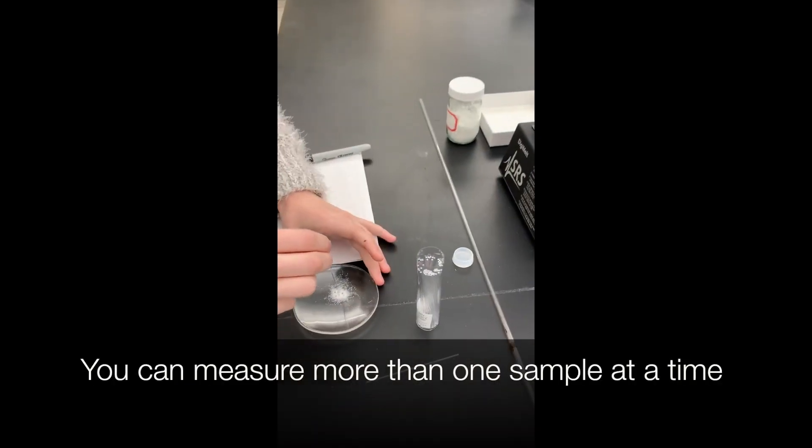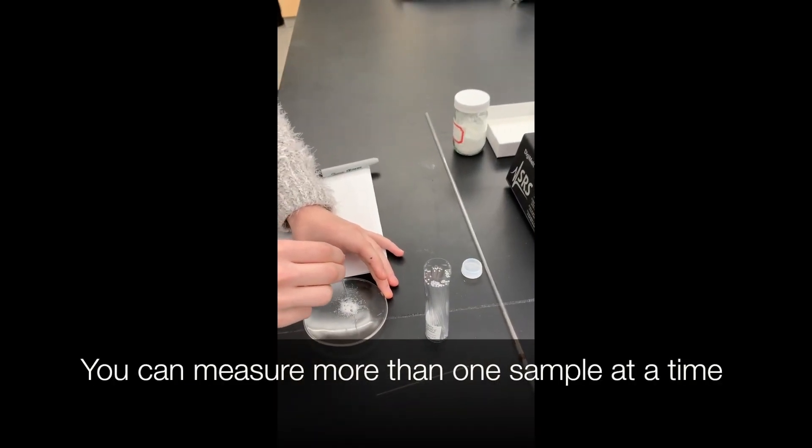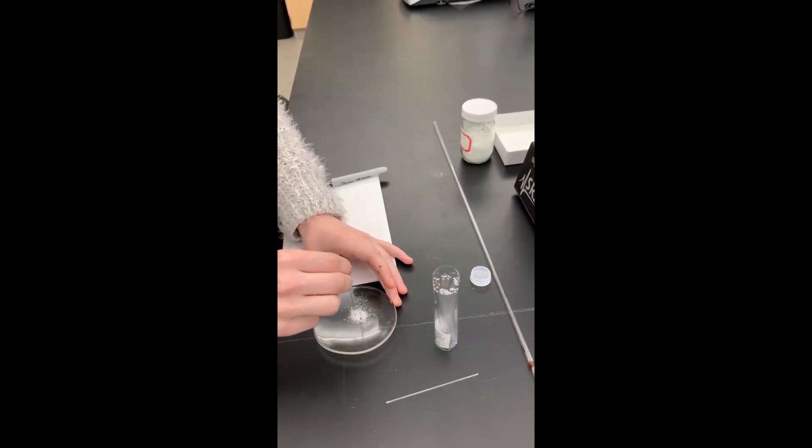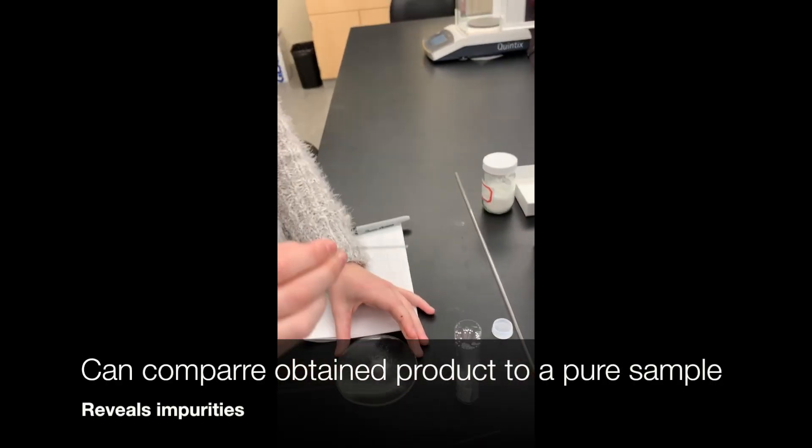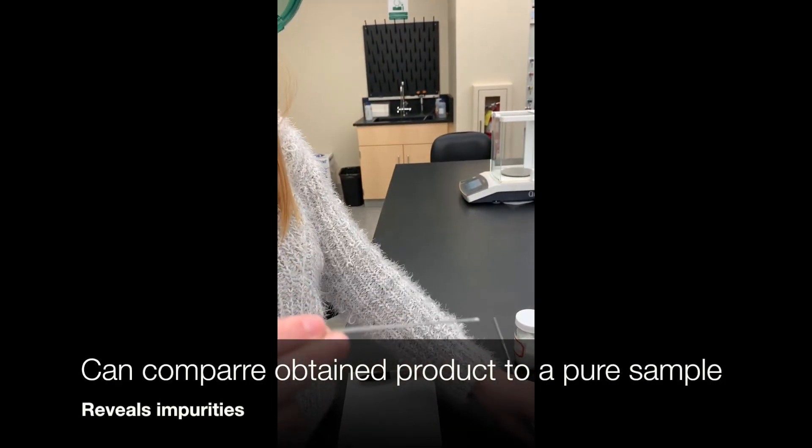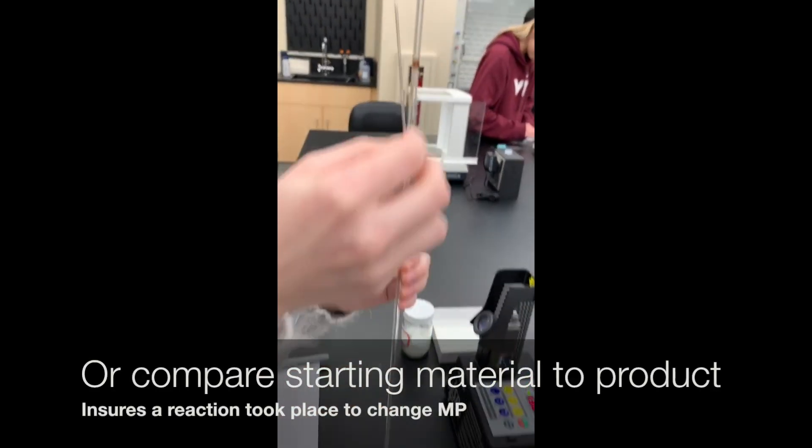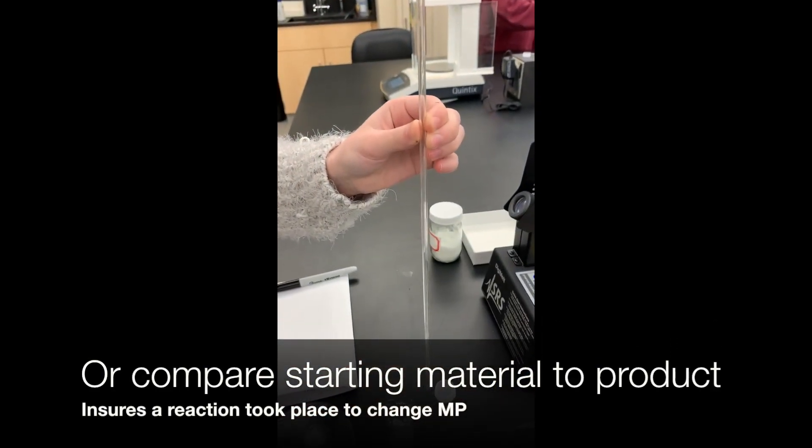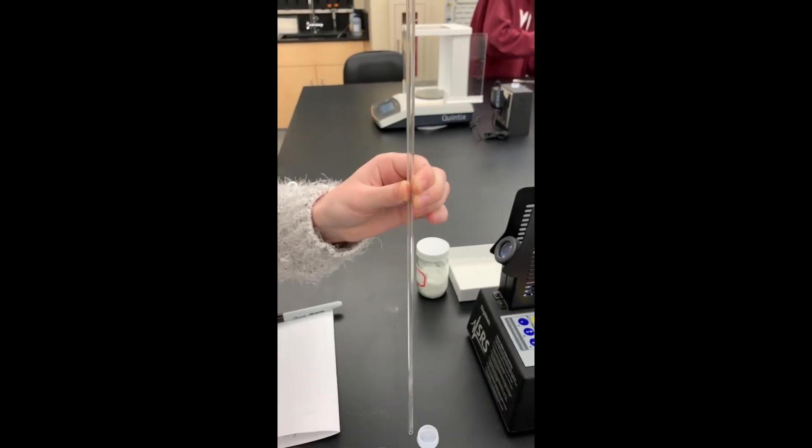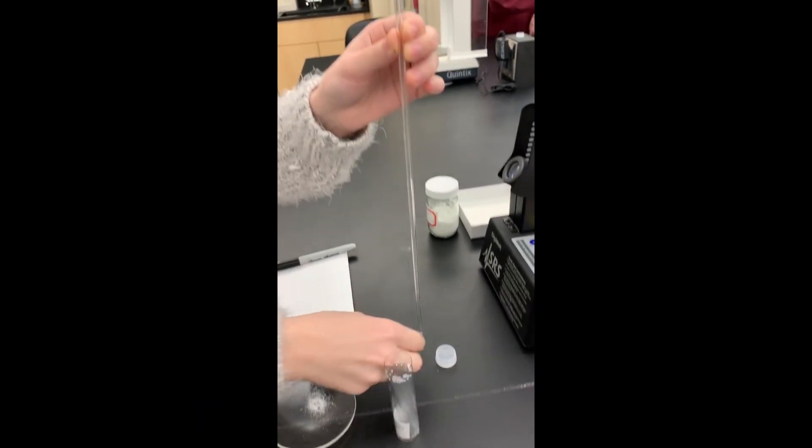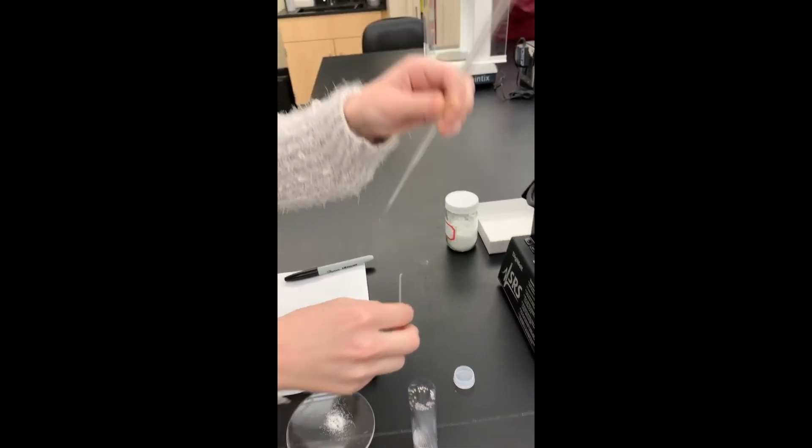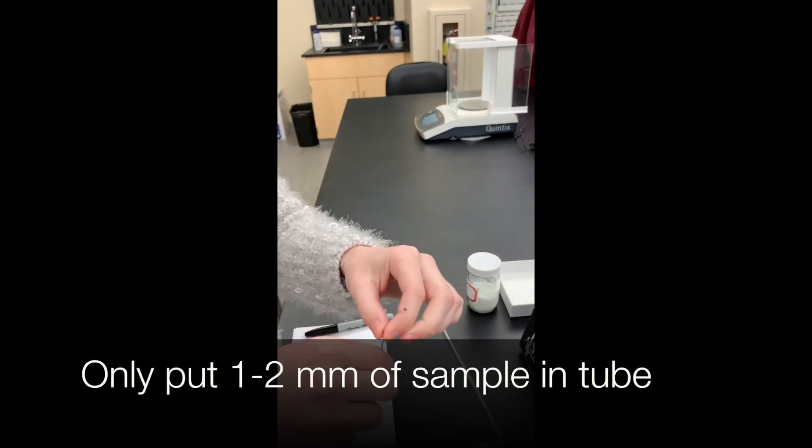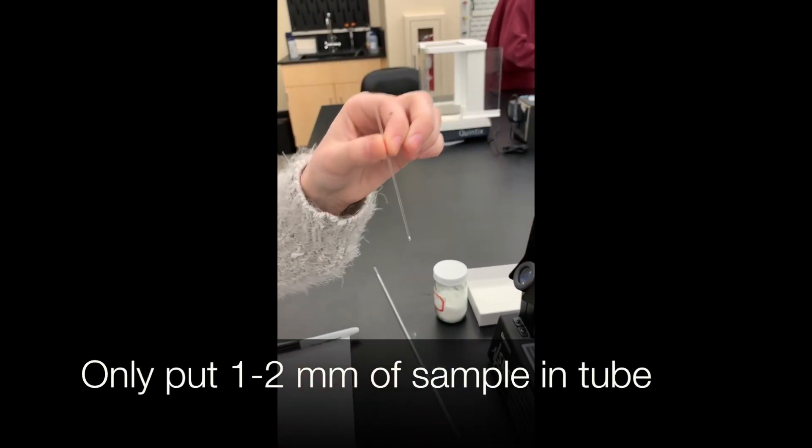You can prepare more than one sample at a time. You can use the melting point of two samples to compare the obtained product to a pure sample of the expected product to reveal impurities, or you can compare the product to the starting material to determine if the reaction actually took place. For example, you could compare the melting point of your aspirin product to salicylic acid, the starting material. The two melting points should be different.